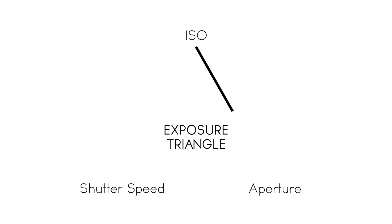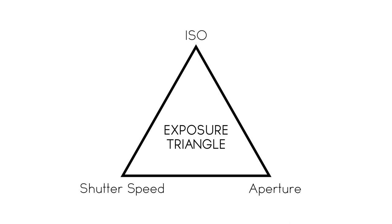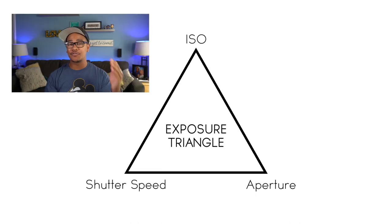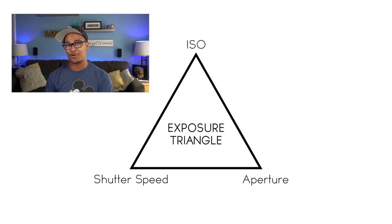Shutter speed, aperture, and ISO — those are the three things that make up the exposure triangle. So let's take a look at that exposure triangle now that we understand what all these things do. We've been looking at this triangle the whole time, and now we're gonna add in a few things we've learned — specifically the things that each of these pieces affect about your picture.